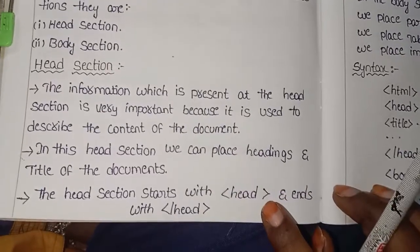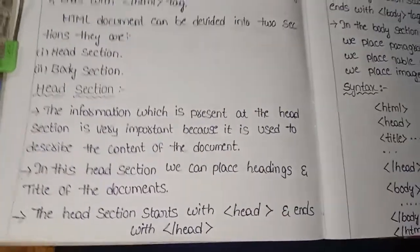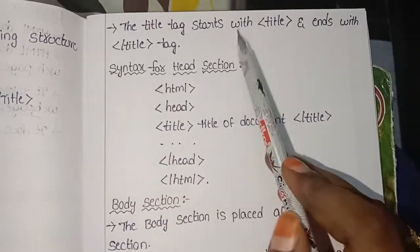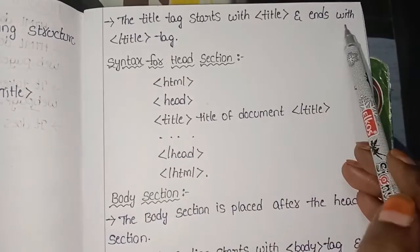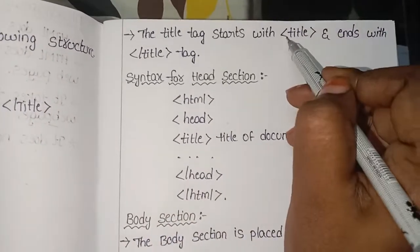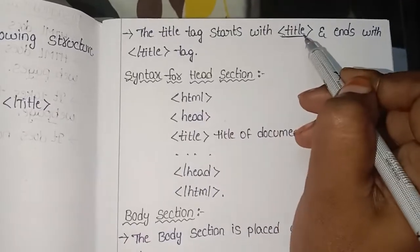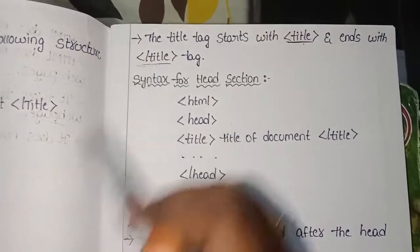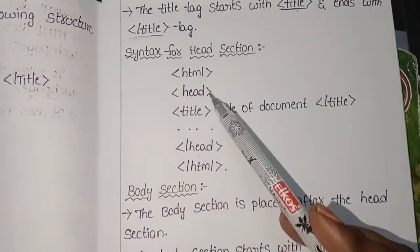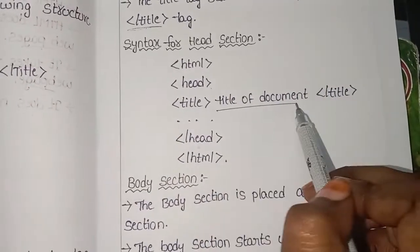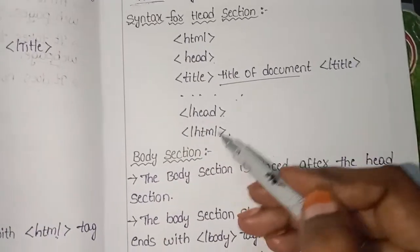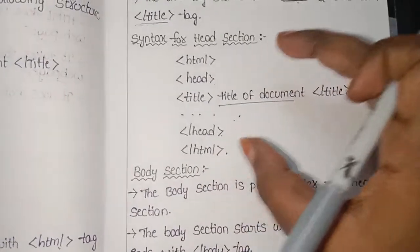Opening and closing tags are compulsory. Every tag will open and the closing tag will end it. The title tag starts and ends with the title tag using angle brackets. The title is closed after the name of the title. Then the head section is closed, and the HTML tag is closed. This is the syntax of the head section.